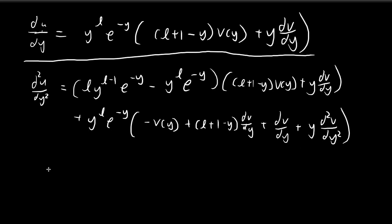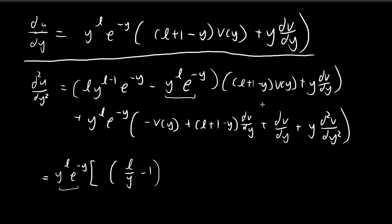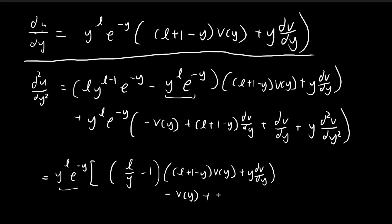Of course we can simplify this. We pull out y to the power of l and e to the power of negative y. Considering the terms one by one: where we've pulled out an extra y factor, we compensate by dividing by y in the denominator. Where we've pulled out e to the power of negative y entirely, that term reduces to negative 1. After expanding, inside the bracket we get: the remaining terms give negative v of y plus y dv/dy, then minus v of y plus l plus 1 minus y times dv/dy, plus dv/dy, plus y times d²v/dy².